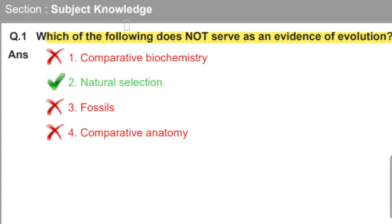The first question is which of the following does not serve as an evidence of evolution. This is not the evidence of evolution. So you have comparative biochemistry, fossils, and comparative anatomy. In this case, we can understand that natural selection is not evidence of evolution. The right answer is second.